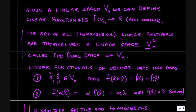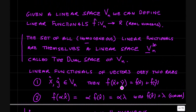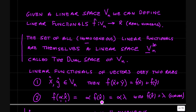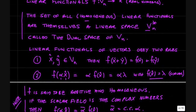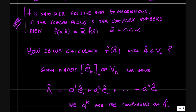Linear functionals of vectors obey two rules that make them linear. First, f of (x plus y) equals f of x plus f of y — the linear functional of the sum of two vectors gives you two scalars which you add up. Second, f is homogeneous: f of (alpha x) equals alpha times f of x. So f of alpha x is alpha times lambda, where f of x equals lambda. A function obeying those two properties is said to be additive and homogeneous.